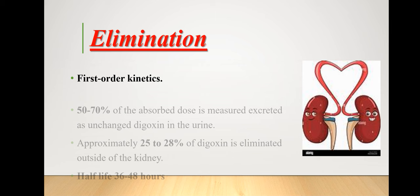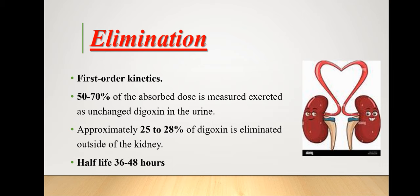Most digoxin is excreted through renal excretion in unchanged form, compared to biliary excretion, which is of less importance. The half-life of digoxin is 36 to 48 hours, and it increases in cases of renal impairment. Half-life is important for determining the excretion of the drug, achieving steady-state concentration, and determining duration of drug action.